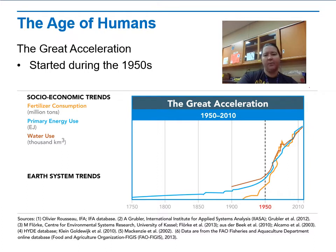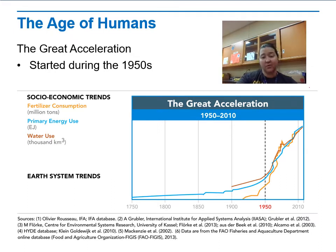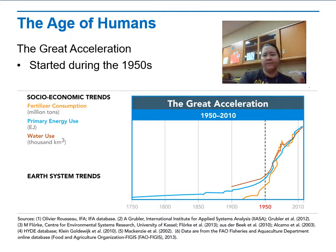Coupled with that, our water usage also increased — you can see the red line that just appeared on the graph. Water use rose because of irrigation systems for farming, moving water around, accessing water, bathing, clothes washing, and all of that.